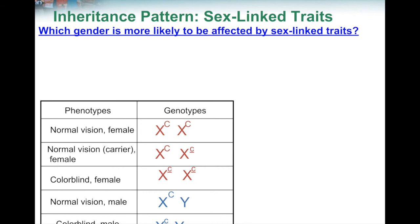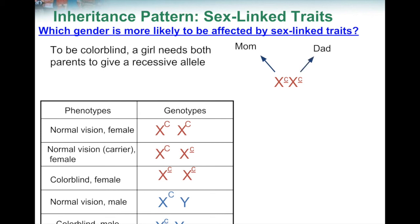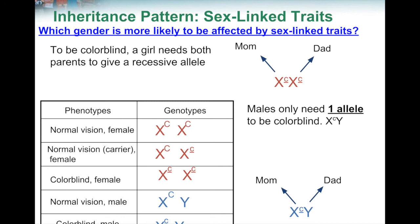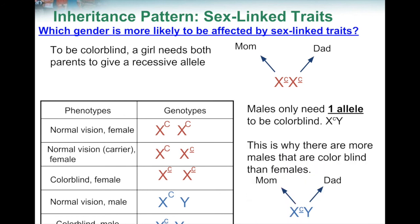Which gender is more likely to be affected by sex-linked traits like colorblindness? For a girl to be colorblind, she needs an X with lowercase c from mom AND an X with lowercase c from dad — both parents must give her the recessive allele. For a boy with XY, the Y comes from dad, so the X lowercase c must come from mom. Males only need one recessive allele to be colorblind, while females need both. That's why men are more likely to be colorblind, and also more likely to have Duchenne muscular dystrophy and hemophilia A.